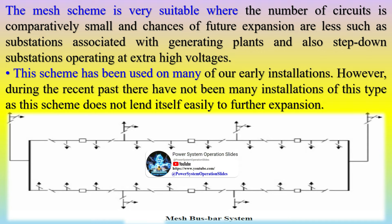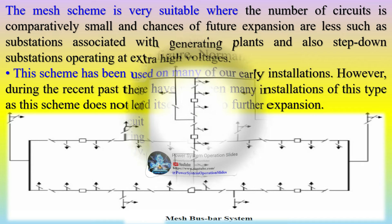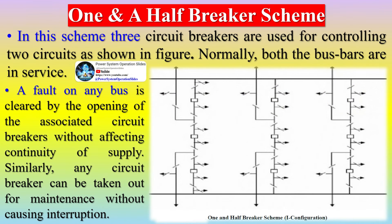There are, however, some problems such as occurrence of a fault when a circuit breaker is being maintained, resulting in a double break in the mesh, and capacity limitation of the equipment to pass the maximum current that may flow around the mesh.